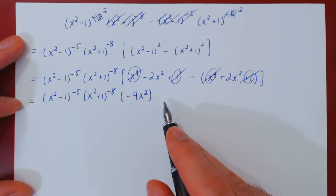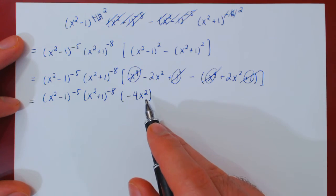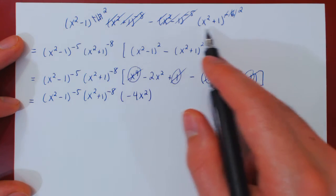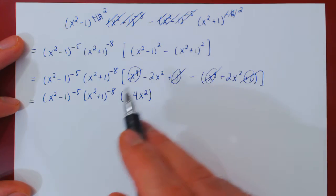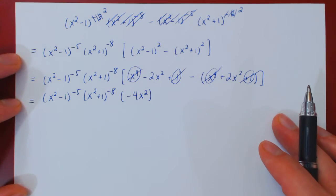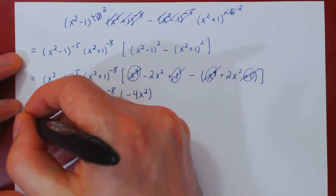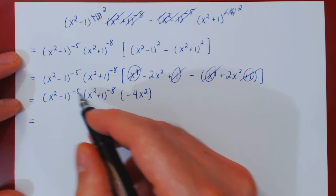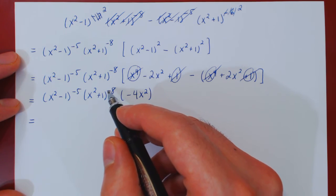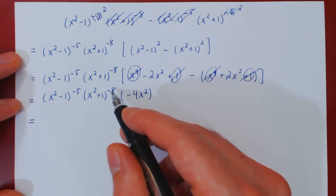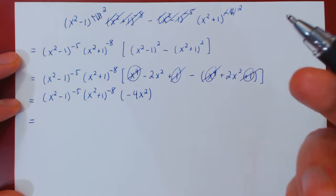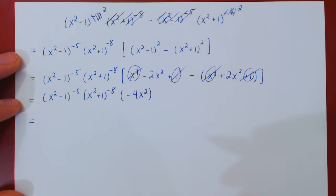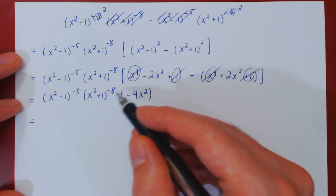And now we have a complete simplification and factorization of the initial difference of two terms. But we can do a little better. And a little better in two ways. One thing is that you may not like those negative exponents. So we can send both of these down, so we'll create a fraction. But the trade-off is we will then have positive exponents.